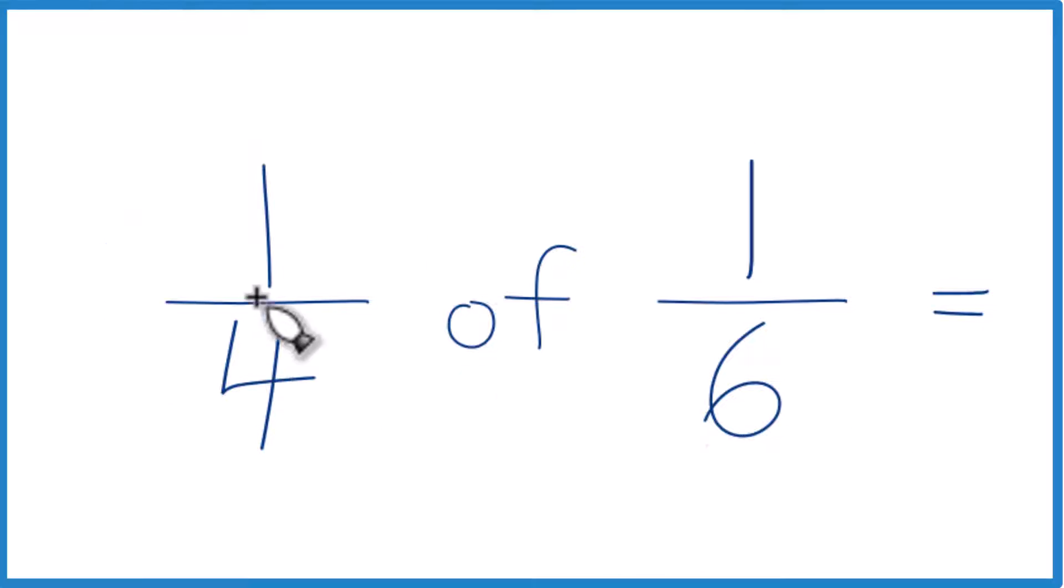So when we look at this, we have fraction of a fraction, and you can think of that as fraction times a fraction. So one-fourth of one-sixth, you could call it one-fourth times one-sixth. They're the same thing. Now it's a little bit easier to do.